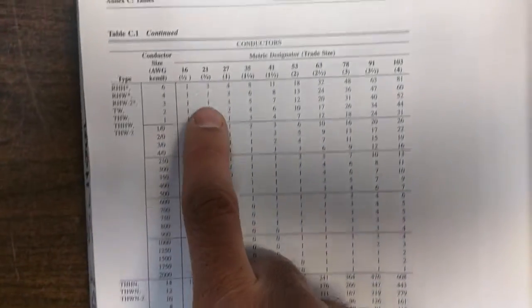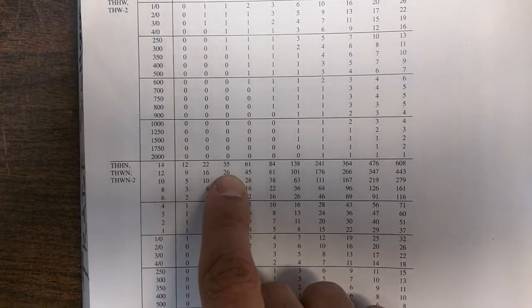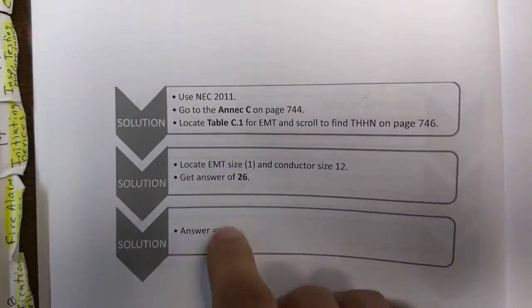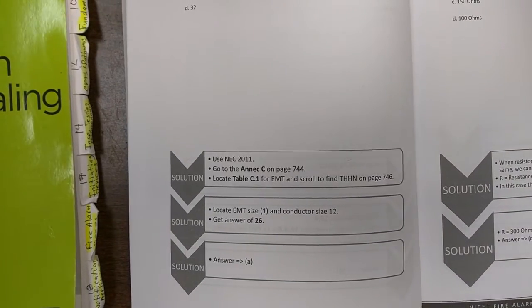Next step is to find the conduit size, which is 1-inch, and match it with the wire size. And there's the answer, 26. This is the step-by-step way of doing it. This is the way you study for it. So that's an example of an NEC question.